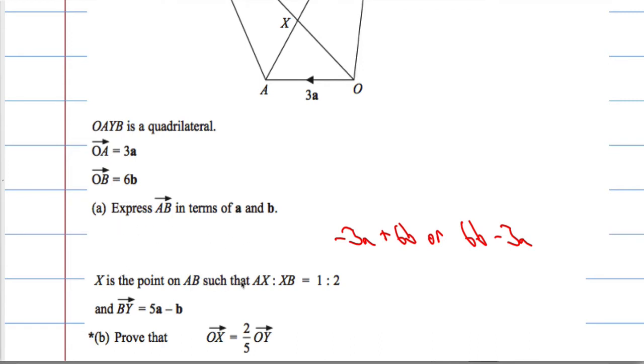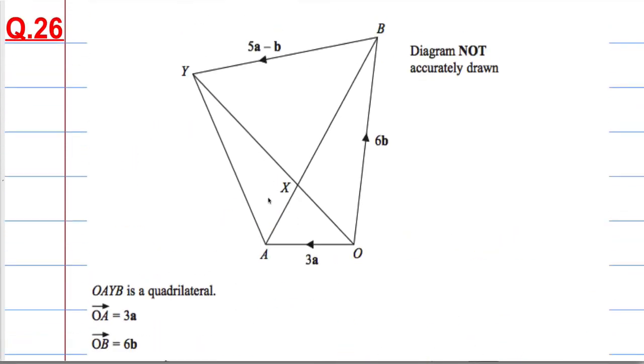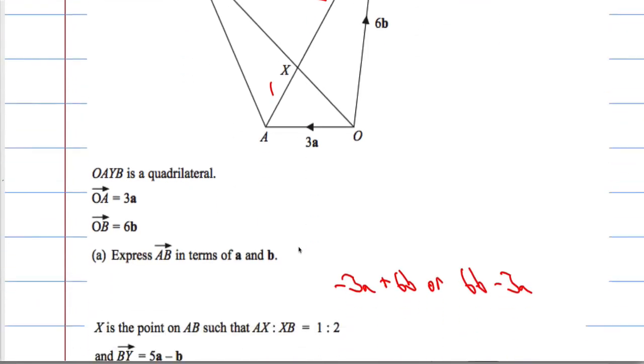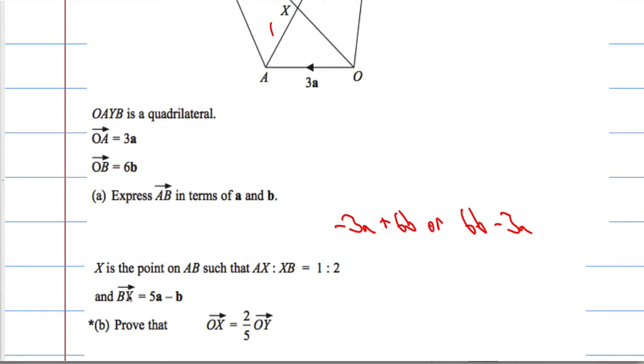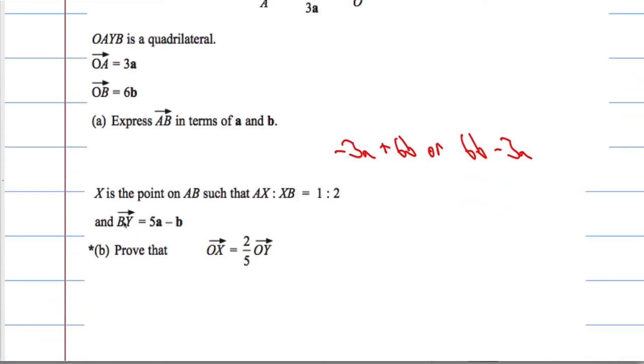X is the point on AB such that AX to XB is in a ratio 1 to 2. So AX is one part, XB is two parts. I'm told that BY equals 5a minus b, and I'm told to prove that OX equals two-fifths of the vector OY.